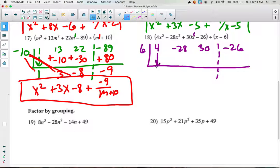And we'll bring down the 4 first. Just bring down and then start your multiplication. 6 times 4 is 24. We'll add those together. Negative 28 plus 24 is negative 4. We'll multiply. 6 times negative 4 is negative 24.